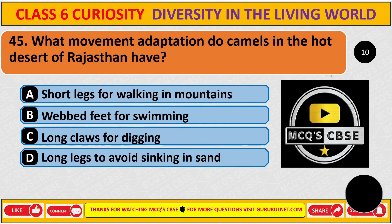What movement adaptation do camels in the hot desert of Rajasthan have? The correct answer is D: long legs to avoid sinking in sand.